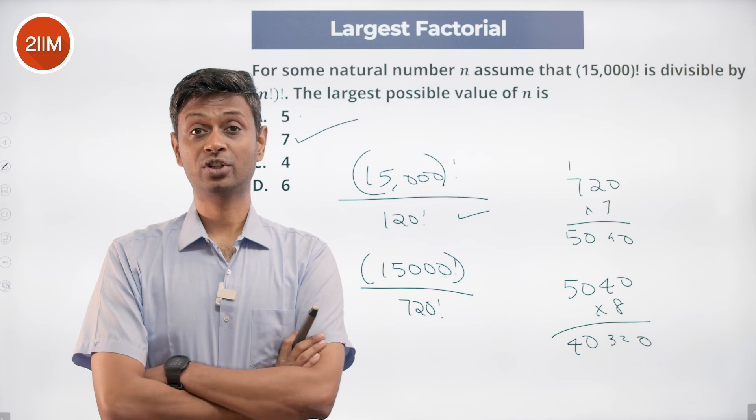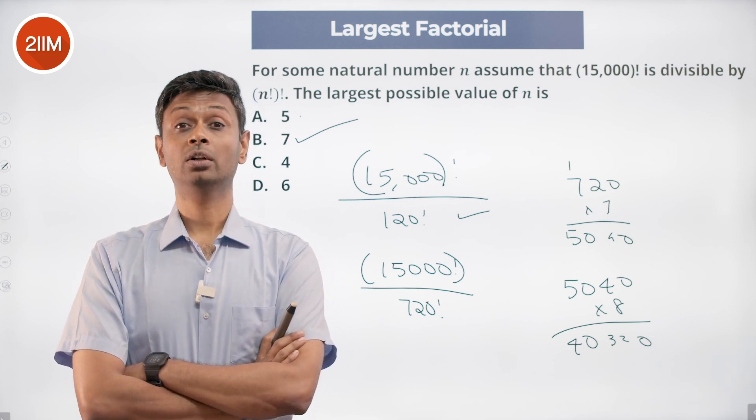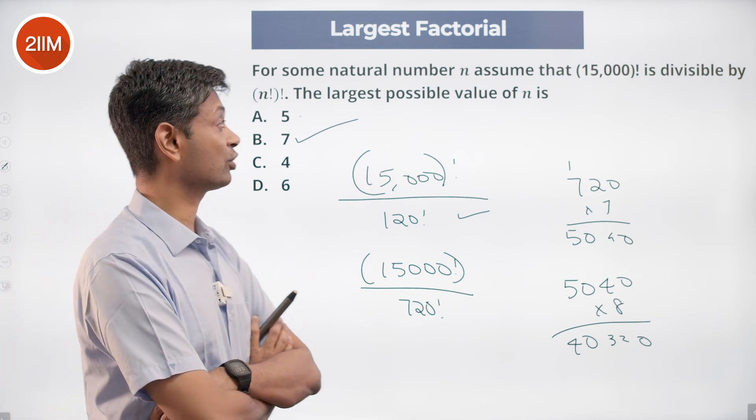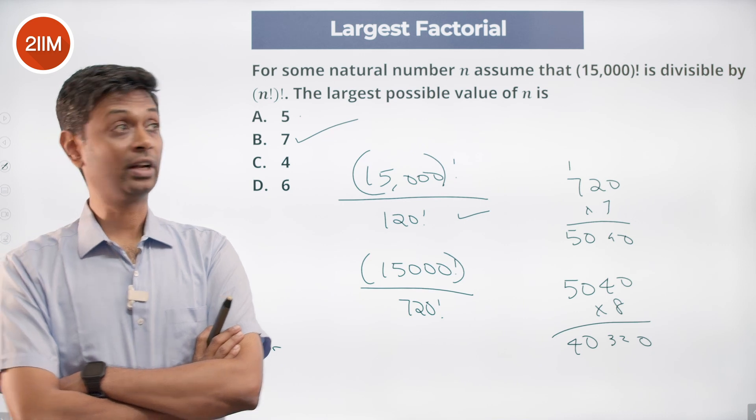I got shocked when I read this question - factorial factorial - that we're dealing with very large numbers. It's basically saying find the smallest n such that n factorial factorial is greater than 15,000, and the answer is 1 less than that.